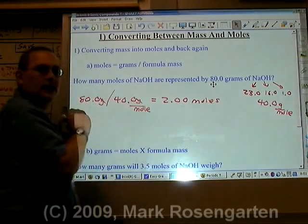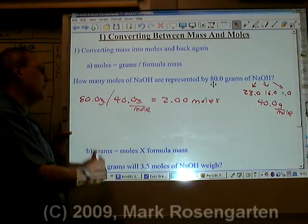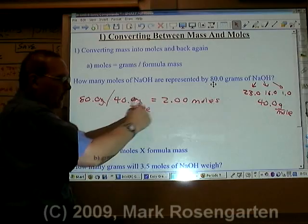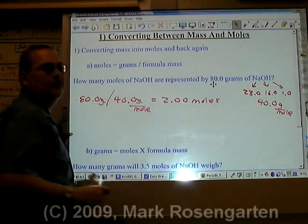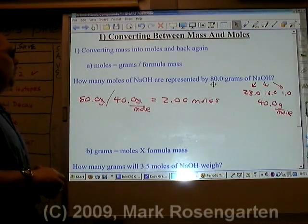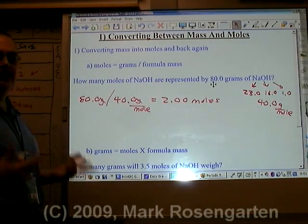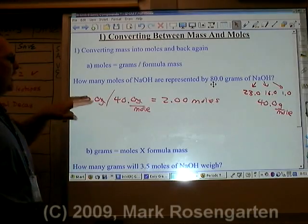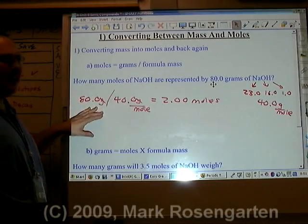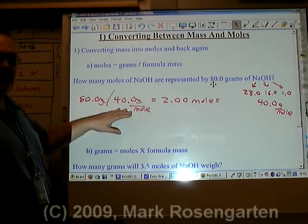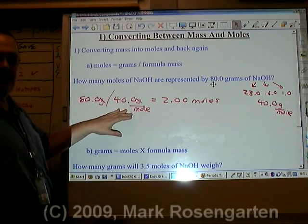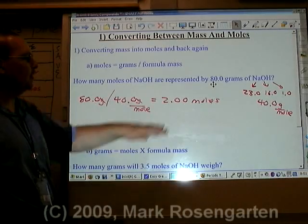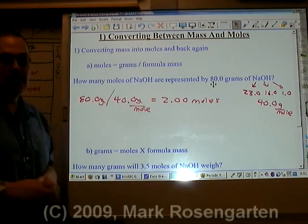Why did I put those extra two zeros in? Three sig figs — I wanted three sig figs in my answer. So if you want to convert grams to moles, what you need to do is take the grams you're given and divide by the gram formula mass. This way your grams will cancel and leave you with moles.